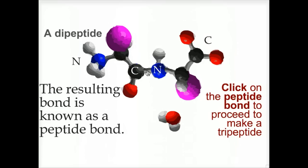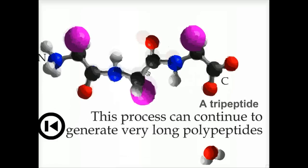We can add amino acids to the ends of the polypeptide. Typically in biological systems this occurs only at the C-terminus. This process can continue and generate extremely long polypeptides, some over a thousand amino acids in length.